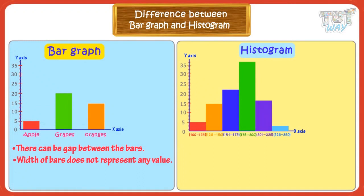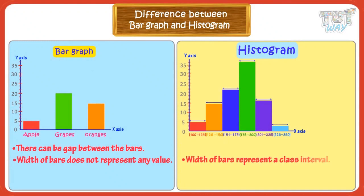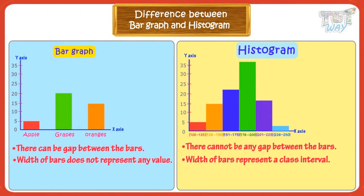Now let's look at histograms. In a histogram, one axis shows the scale of numeric data, like a bar graph. The other axis shows bars where the width of the bars shows the class intervals. There can be no gap between the bars in a histogram. The height of each bar represents the quantity of that class interval related to the information on the other axis — that part is the same as a bar graph.